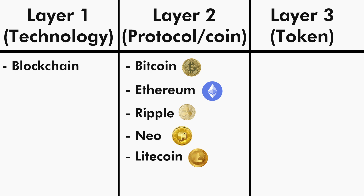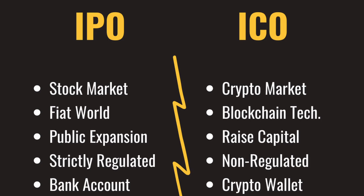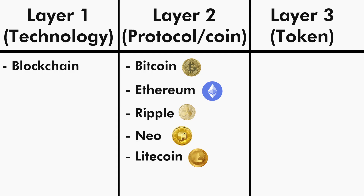Now in Layer 3 we have tokens. You've heard about ICO — Initial Coin Offering — like an IPO on the stock market. ICO is sometimes misunderstood; it is actually about tokens, even though it is called Initial Coin Offering. We will talk about ICOs and tokens more in section 3, but right now it is important to understand that coins are in Layer 2 while tokens are in Layer 3. Tokens rely on smart contracts which are built on top of the protocols in Layer 2.